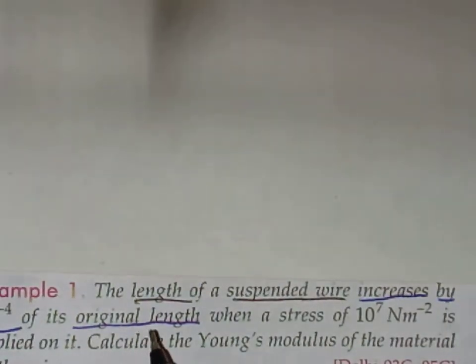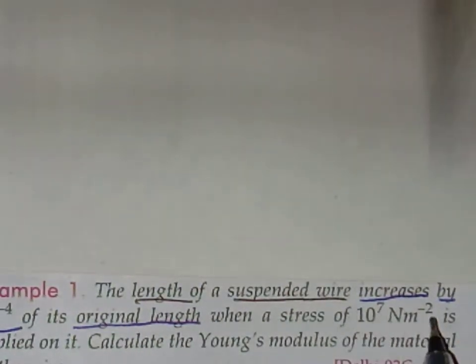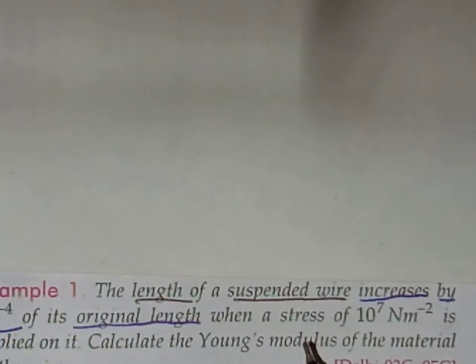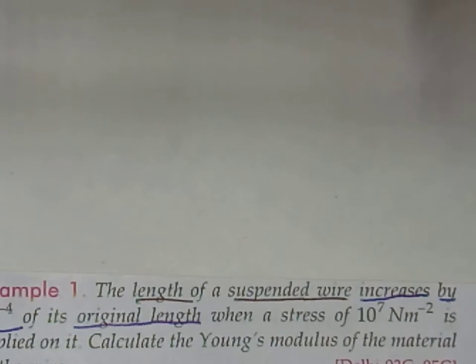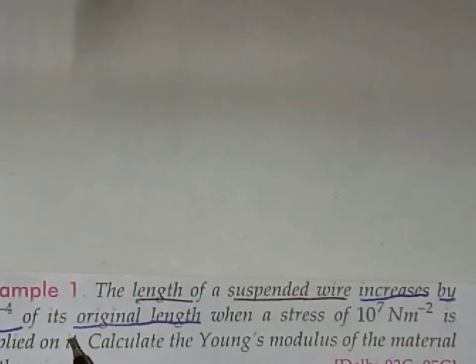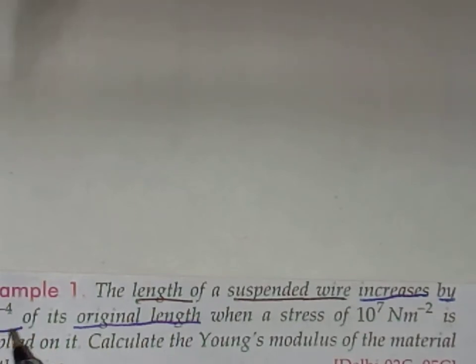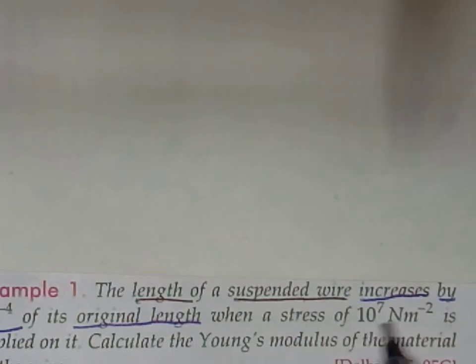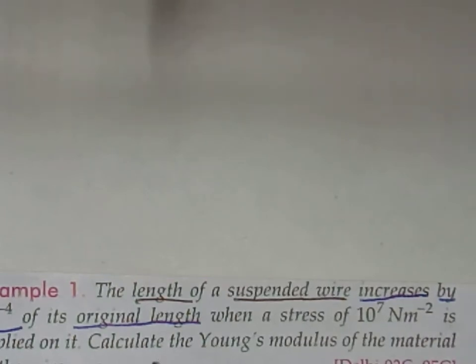The length of a suspended wire increases by 10 to the power minus 4 — that is delta L by L, which is strain. The original length is L, and the strain is given as 10 to the power minus 4. The stress applied is 10 to the power seven Newton per meter square. We have to calculate the Young's modulus of the material of the wire.